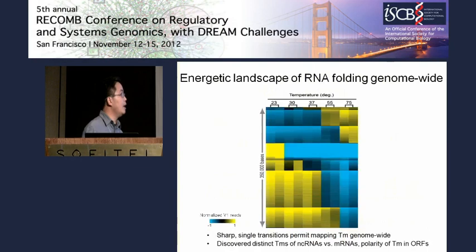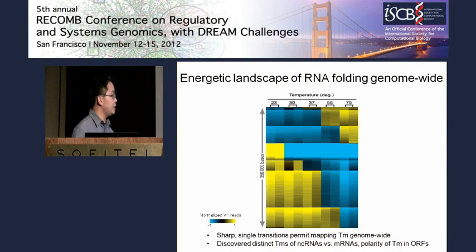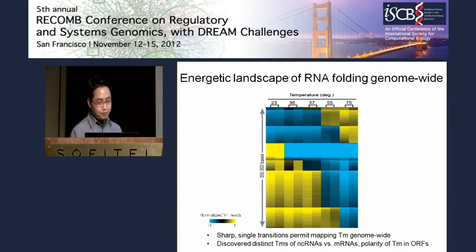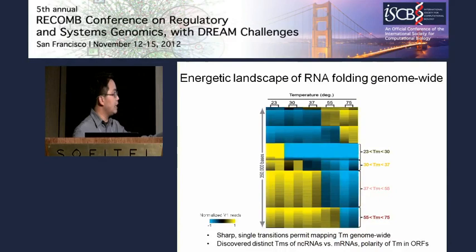Using the yeast transcriptome, we performed 10 PARS experiments at different temperatures. Each column is a sample, each row is a base. You can see sharp single transitions that permit us to map melting temperatures genome-wide. This used the step-miner algorithm that David Dill developed, which allows matching transitions by template. For example, these bases were double-stranded at 23 degrees, then they melt between two temperature points, so we know the melting temperature must fall in that range.